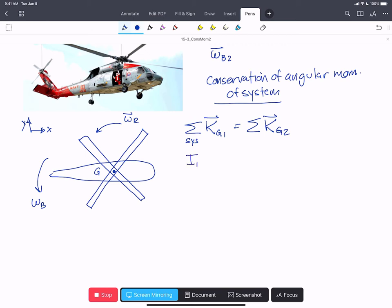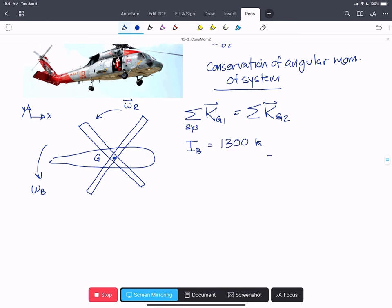We're told that I of the body about g is 1300 kilograms meters squared. And I of the rotor, we're given that's four thin rods. So a thin rod ending at g, that's one-third ml squared, or 30 kilograms times five meters all squared. And that's going to be a thousand kilograms meters squared.